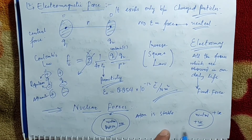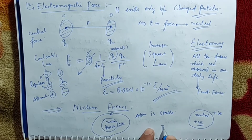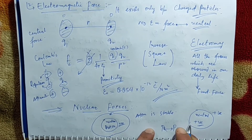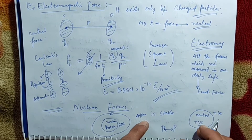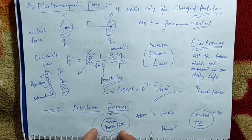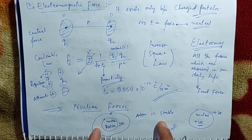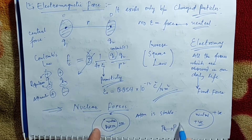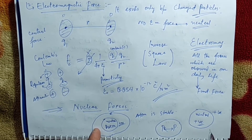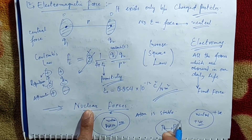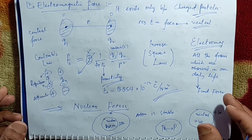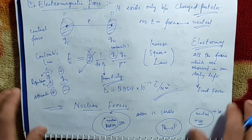If there are two protons inside the nucleus — proton and proton — there will be a repulsion between them. Then how does the atom remain stable? Here comes the nuclear force to the rescue.